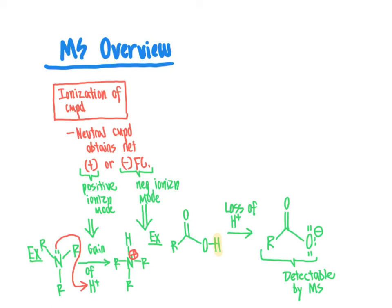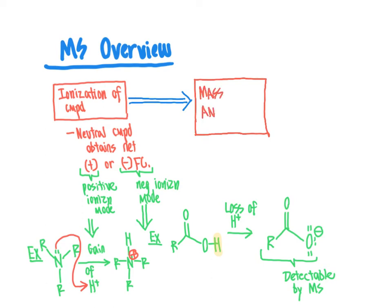There are several different ways that ionization of compounds can be accomplished. In the next video, we will go into more depth about ways to ionize organic molecules. For now, continuing this overview: after the compound is ionized through a variety of techniques, the ion enters what is referred to as the mass analyzer.